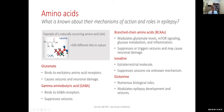Amino acids are small chemicals that have an amine group — which gives them the name amino — and an acid group, which has a COOH group. There are over 500 different amino acids in nature, and what's interesting is that pretty much every amino acid has a mirror image of itself. So one amino acid exists in two forms: a D-form and an L-form.